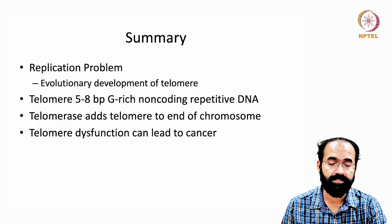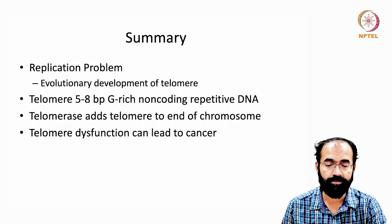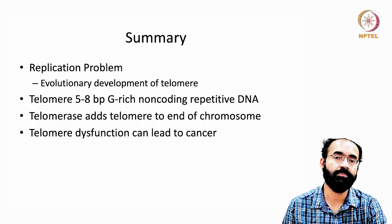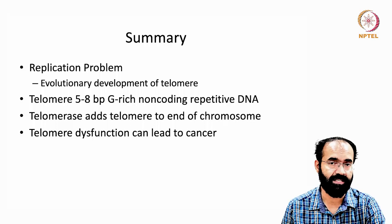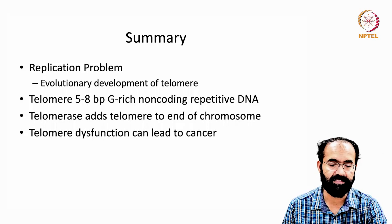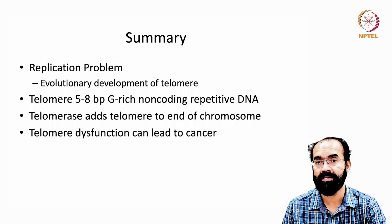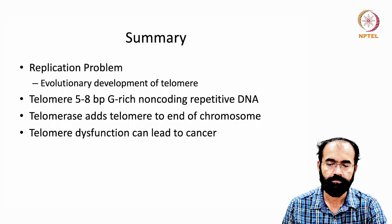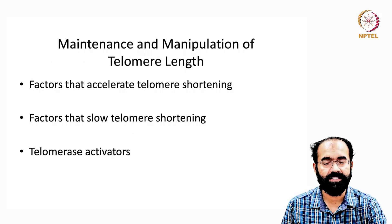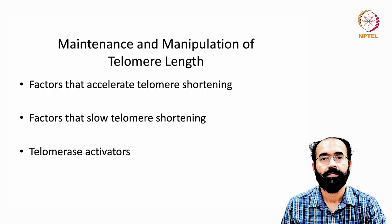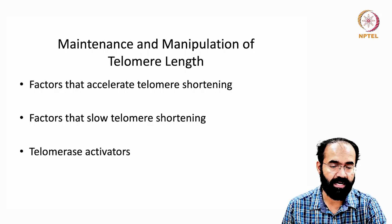Telomeres are around 5 to 8 base pair G-rich repetitive DNA sequences. Telomerase adds telomere repeats to the ends of chromosomes in germ cells, cancer cells, and stem cells — but not in somatic cells. Telomere dysfunction can lead to cancer. Now let us understand a little more about the maintenance and manipulation of telomere length.